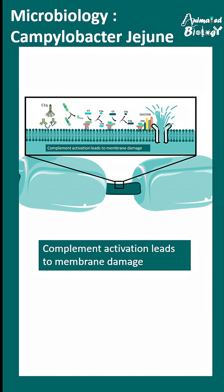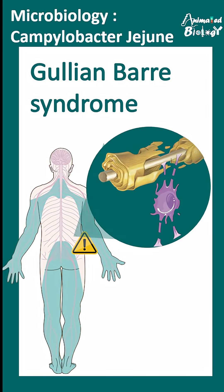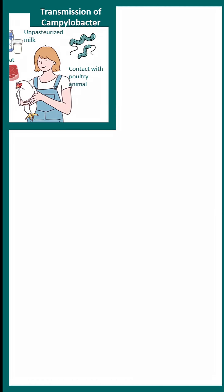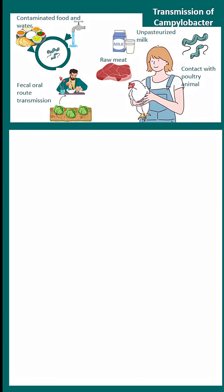This cross-reactivity leads to complement fixation on the membrane of these neurons, resulting in their destruction. The peripheral nerves are damaged, leading to Guillain-Barré syndrome. Overall, this can be transmitted via contaminated food and water, so fecal-to-oral route of transmission is pretty common.